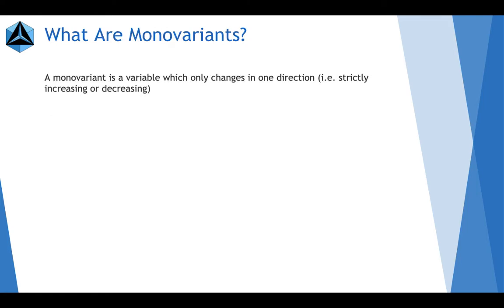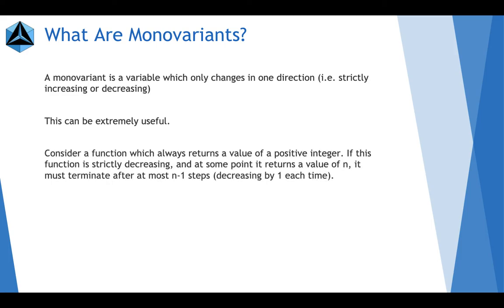So, what are monovariants? It's a variable which only changes in one direction, like strictly increasing or decreasing. This can be very useful. Consider a function which always returns a value of a positive integer. If this function is strictly decreasing and at some point it returns a value of n, it must terminate after at most n minus 1 steps, decreasing by 1 each time.